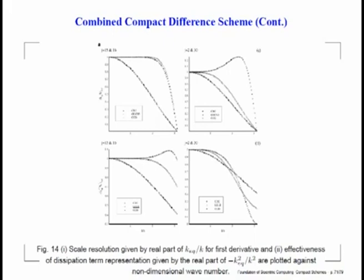In this figure, the lowermost line corresponds to the traditional CD2 scheme that we have seen time and again. The top curve corresponds to the optimized compact scheme that we have improved upon — borrowed the idea from Haras and Tasan and improved the boundary closure — and that gives us the best resolution, remaining flat all the way up to kh equal to about 2.3 or 2.4, and then sloping down to 0 at pi.